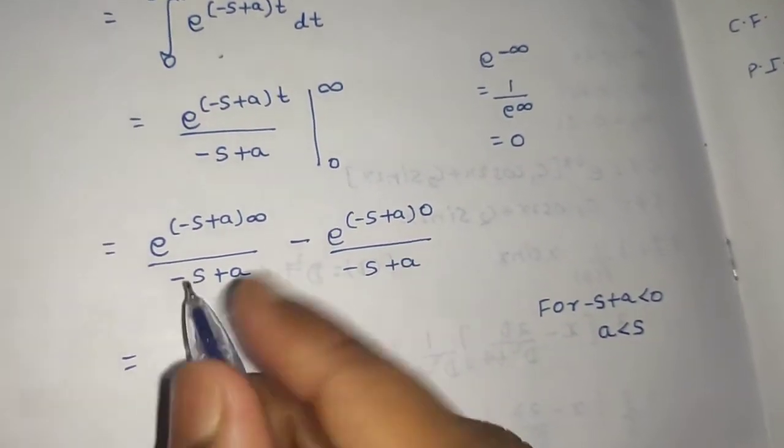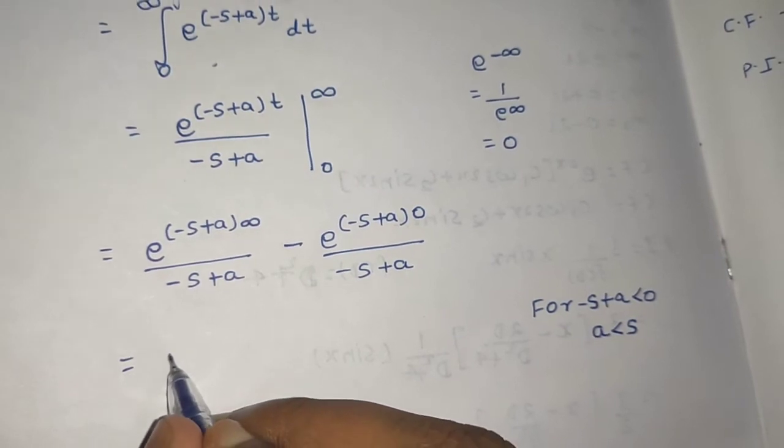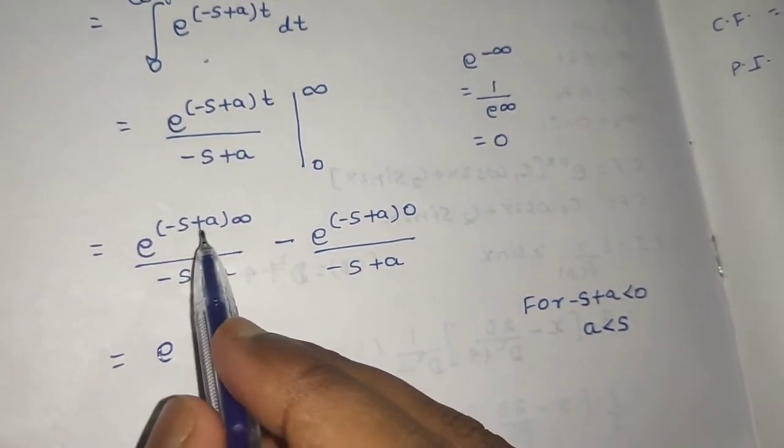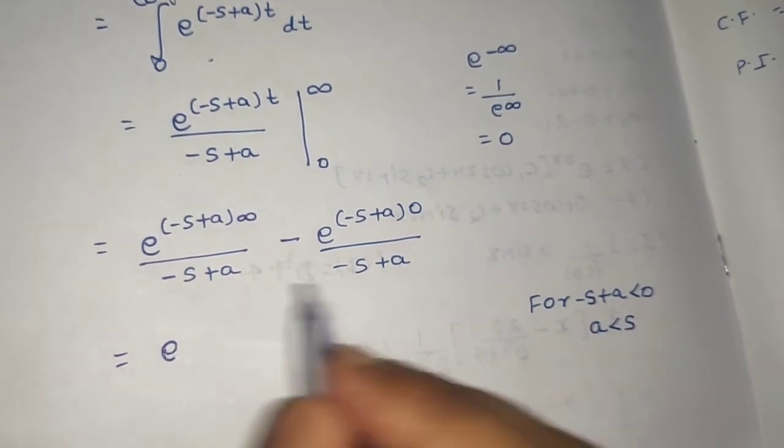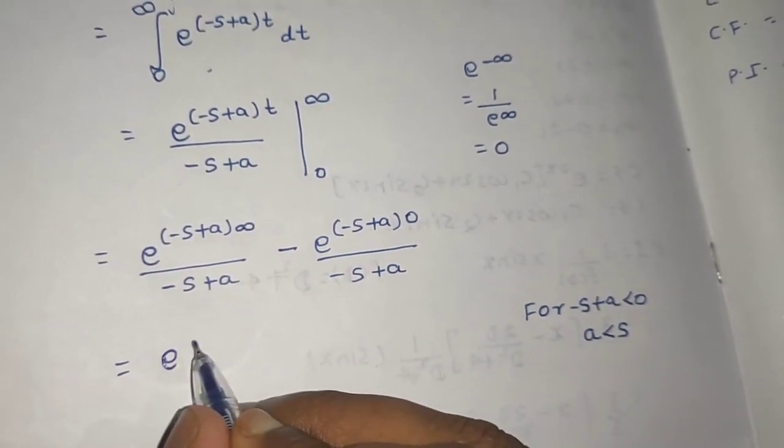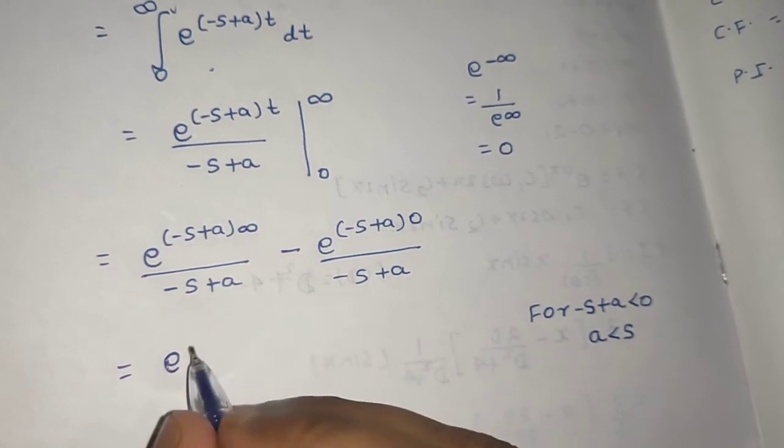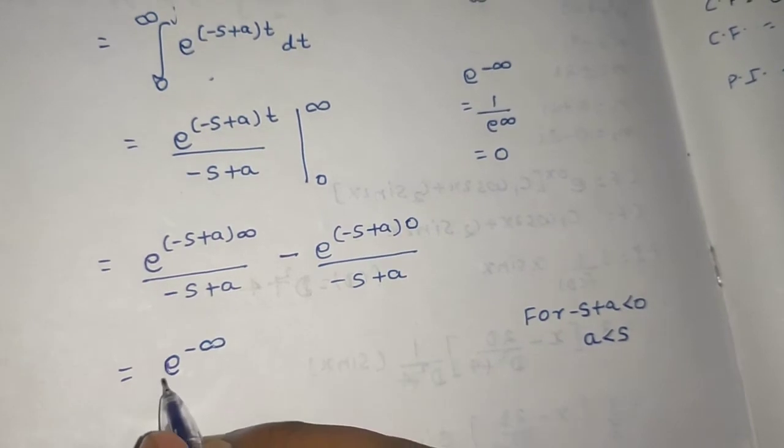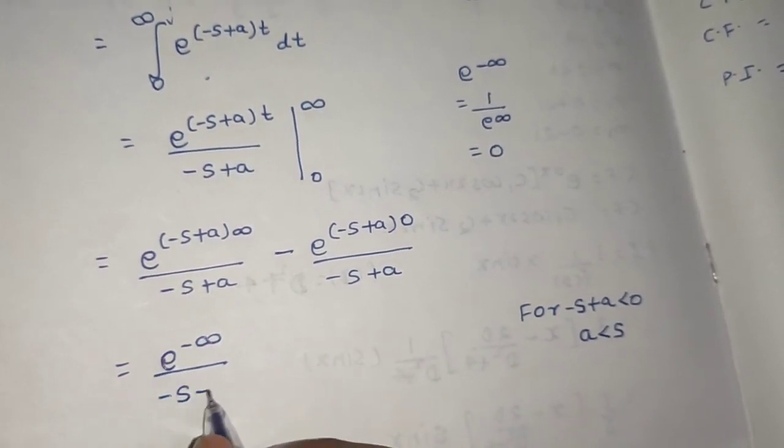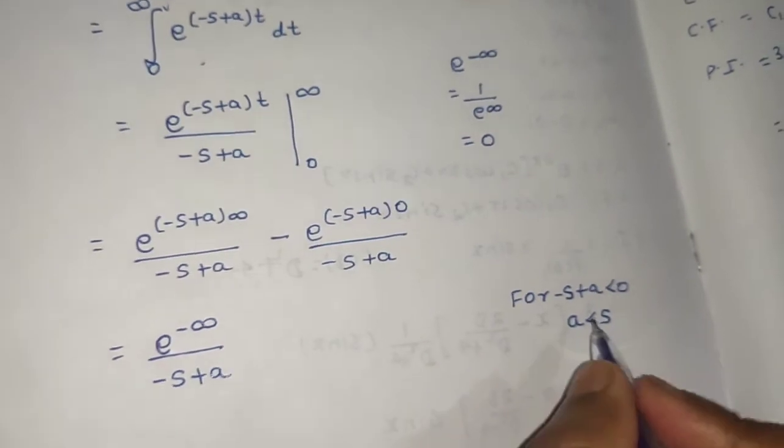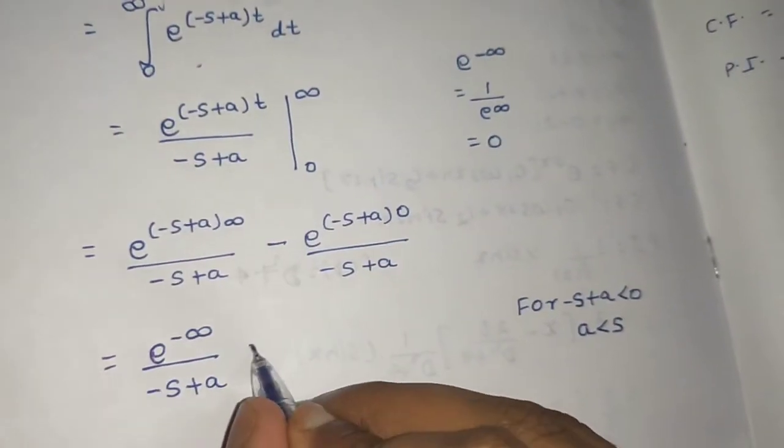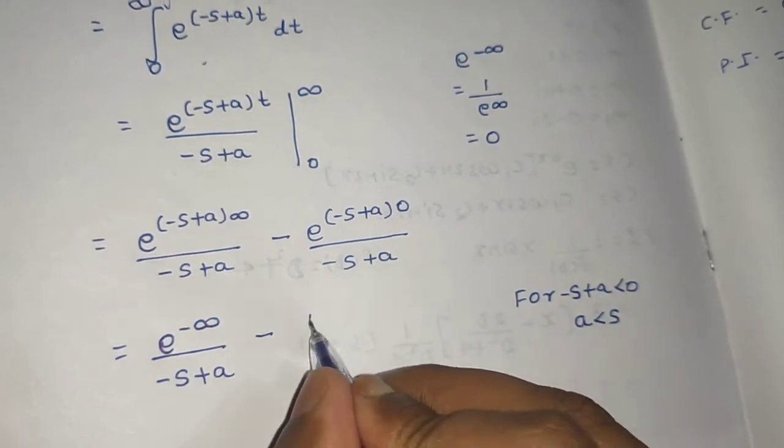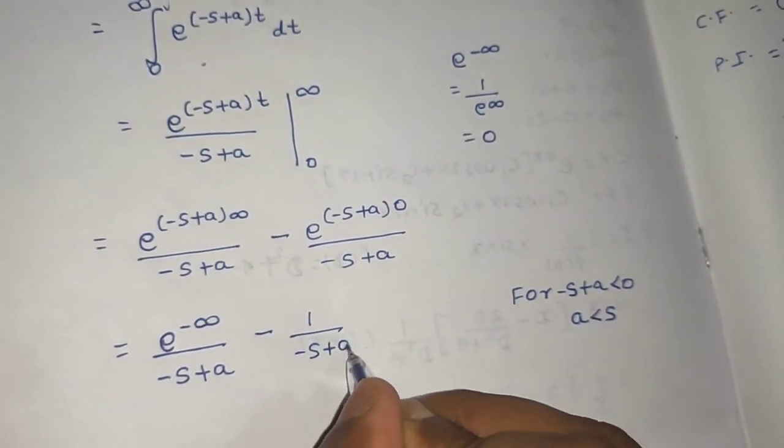So, when I put this condition, I will get e power minus of infinity divided by minus s plus a only for this condition. Now e power 0 is 1 divided by minus s plus a.